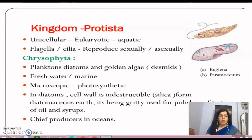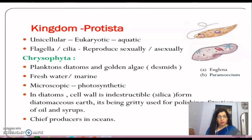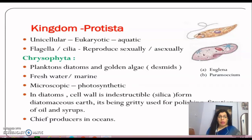We are going to talk about Kingdom Protista. It is a kingdom which includes organisms that are unicellular and eukaryotic. Unicellular organisms were also found in Monera, but those were prokaryotic. These are eukaryotic — the difference is that their cells have a well-defined nucleus plus membrane-bound organelles inside them.